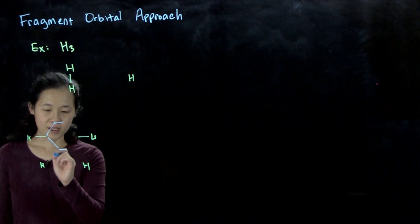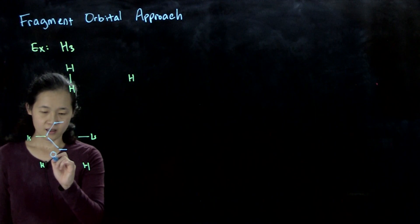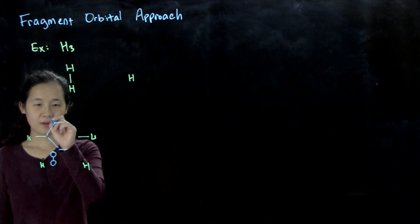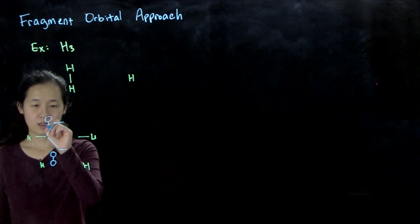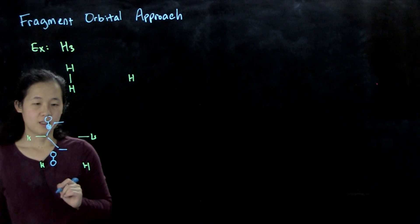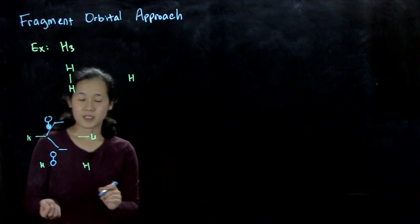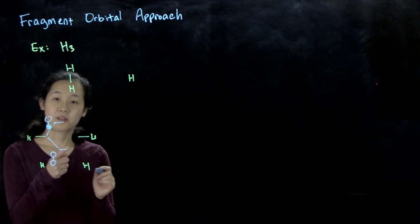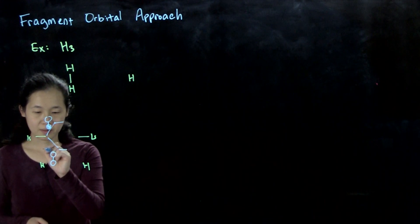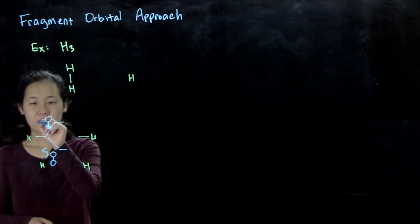This one looks like this, and this one looks like this. So these are our two orbitals, and then we fill in with electrons to form the bonding. This was our sigma g, and this was sigma u.